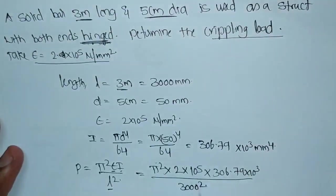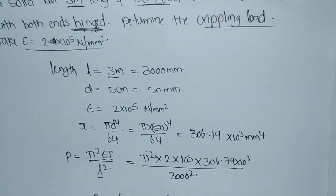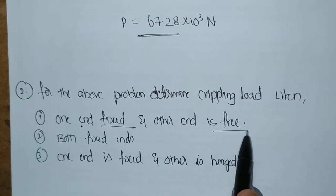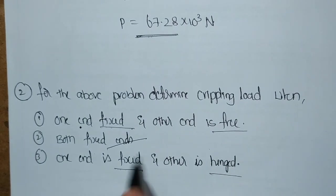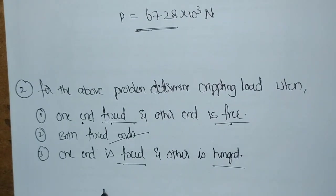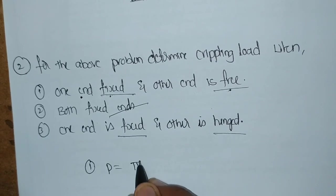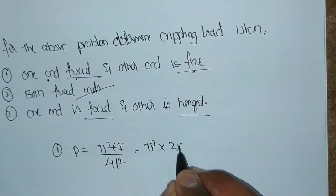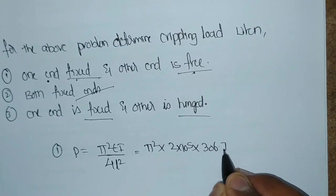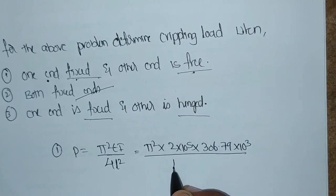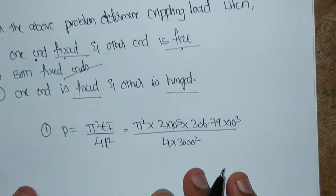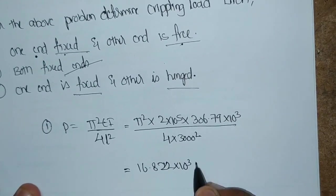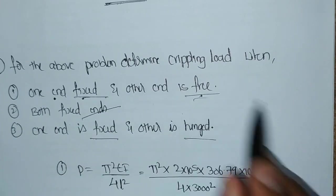Similarly, for the same problem we will find out the different types of conditions. For the same problem, one end is fixed and the other end is free. If one end is fixed and the other end is free, the crippling load formula is Pi squared EI by 4L squared. Substituting: Pi squared into 2 into 10 to the power of 5 into 306.79 into 10 to the power of 3, divided by 4 into 3000 squared. We will get the value as 16.822 into 10 to the power of 3 Newtons. This is for one end fixed and the other end free.